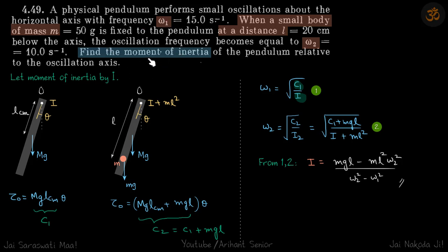In this problem we'll find a nice way to calculate the moment of inertia of a body by measuring the time periods of SHM. So they are given a physical pendulum, let's assume that's a rod, it doesn't matter, it can be anything.